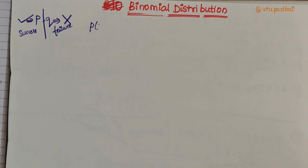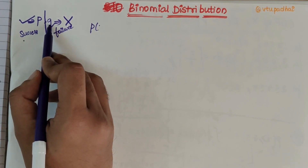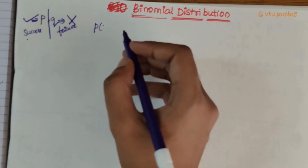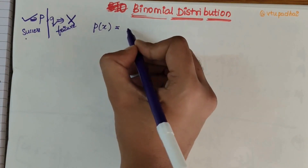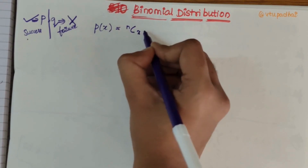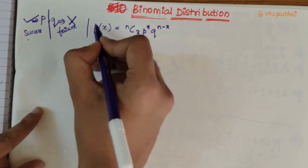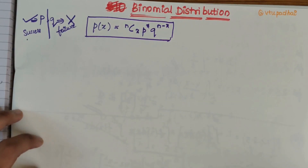We are discussing discrete binomial distribution and will be deriving the mean and variance of binomial distribution. Let P be the probability of success and Q be the probability of failure. The probability of X successes out of n trials can be written as P(X) = NCX * P^X * Q^(N-X). This is the probability distribution function for a binomial distribution.